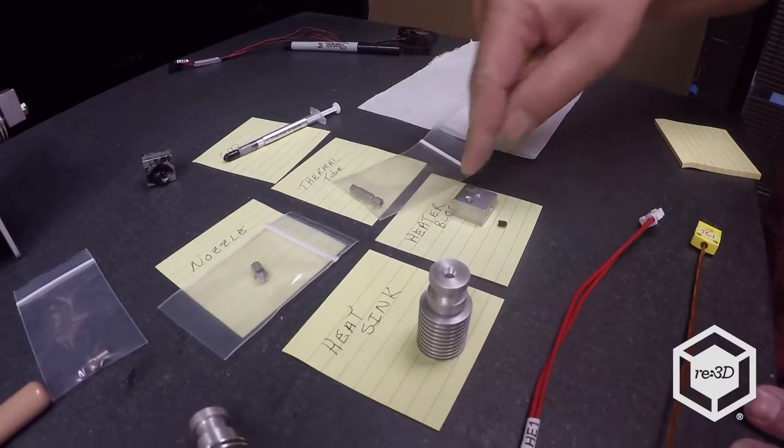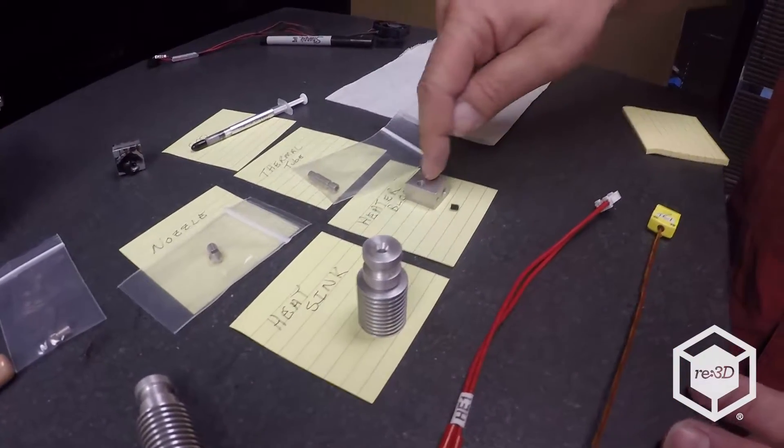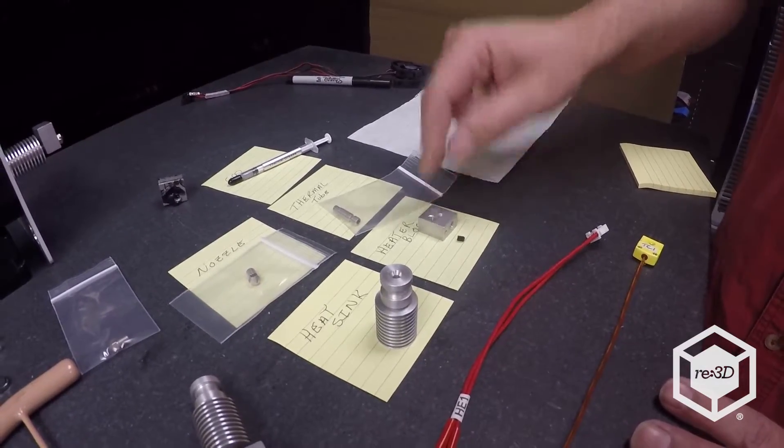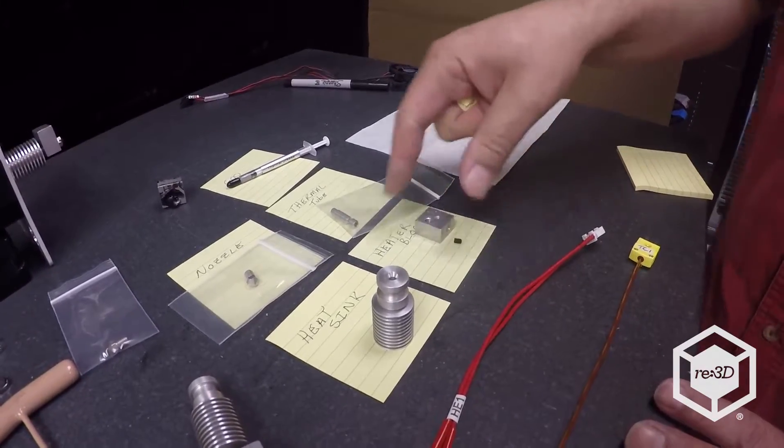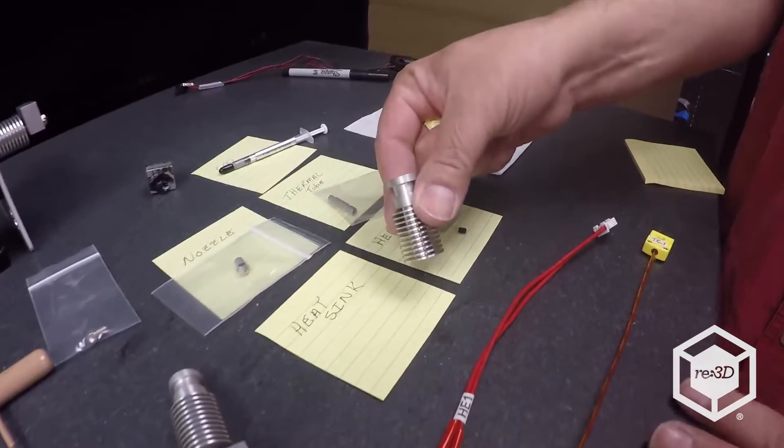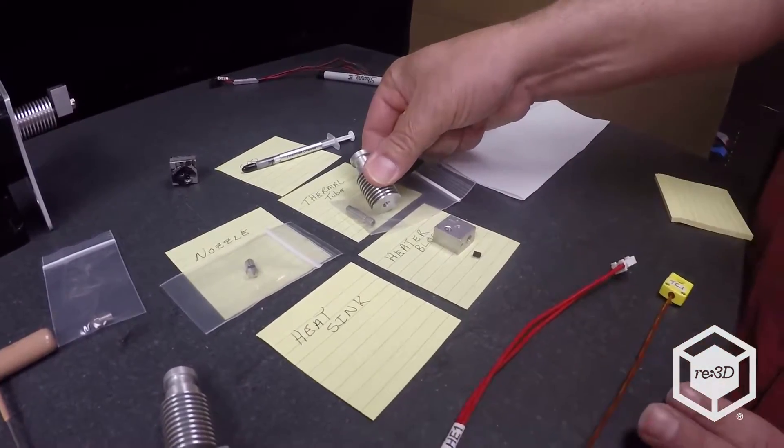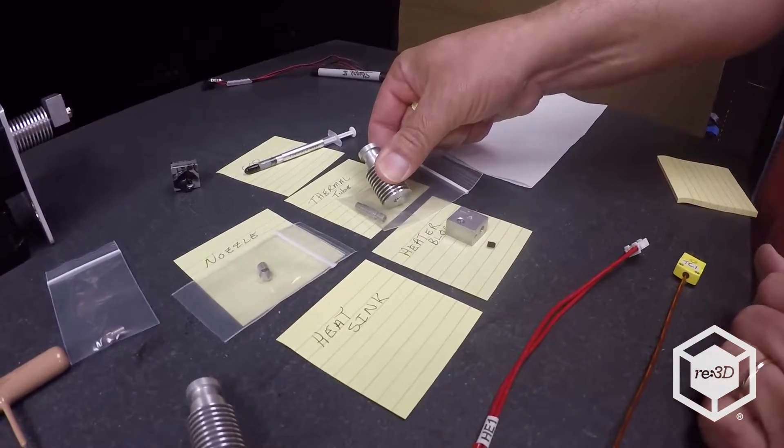The reason for that is you want your hot end hot but you don't want that heat racing up your tube and melting your filament. You want your filament to melt only when you get it in the heater block. So to aid in that we use a heat sink on the other end of the thermal tube which tends to radiate all that heat and keep that filament flowing through.